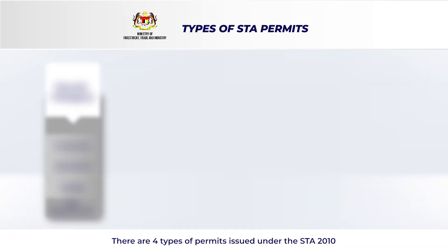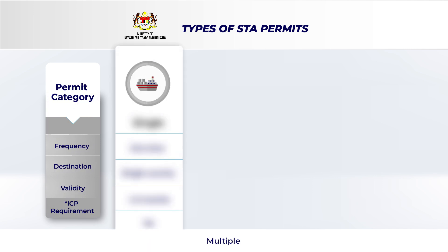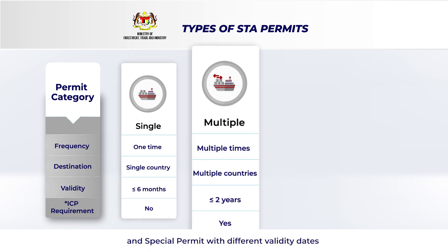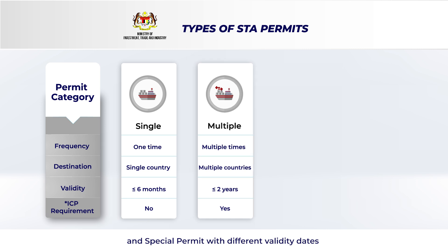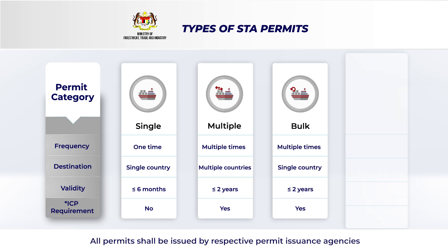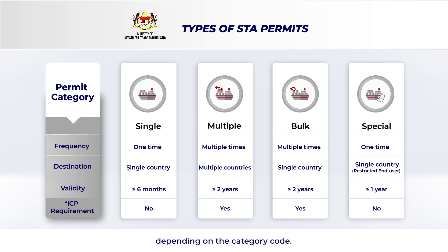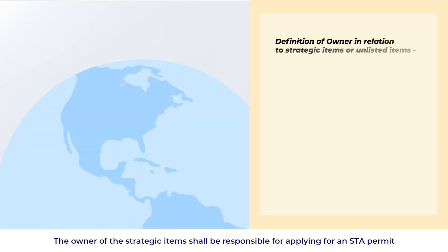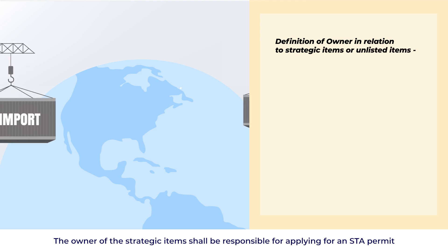There are four types of permits issued under the STA 2010: single, multiple, bolt, and special permit, each with different validity dates. All permits shall be issued by respective permit issuance agencies depending on the category code.